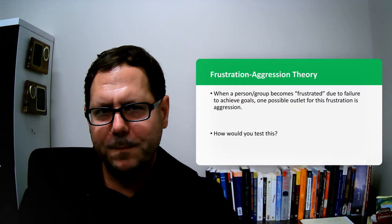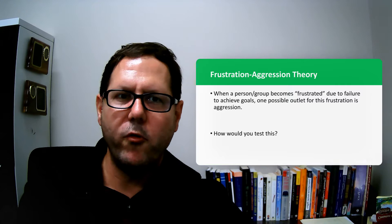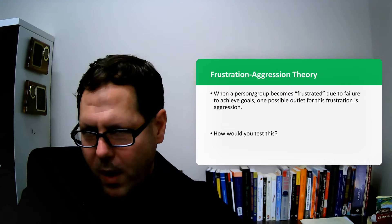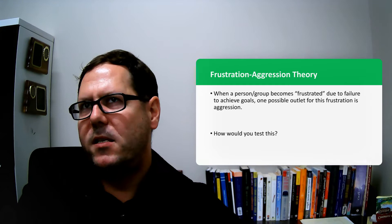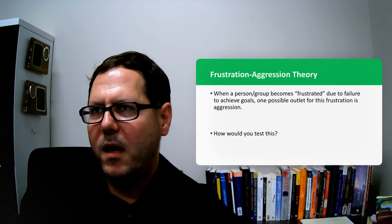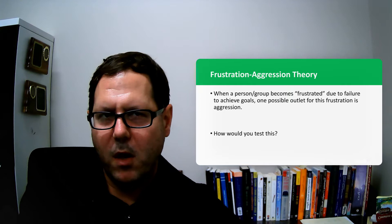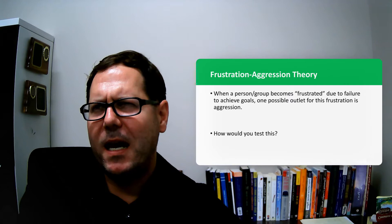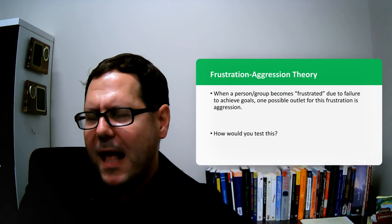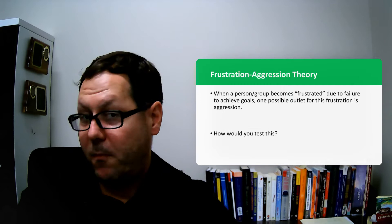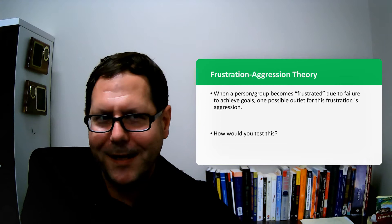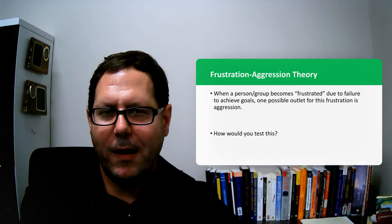This is where frustration-aggression theory comes from. When a group or person becomes frustrated due to failure to achieve goals, one possible outlet for that frustration is violence or aggression. If I was trying to test this argument, I would assume that where we see the most grievances, the most oppression, the most dissatisfaction or anger—however I choose to measure that—that's where I would be seeing the most violence. There should be a pretty strong correlation, maybe not perfect because we have wiggle words that one possible outlet is frustration, but correlation is something we should expect to see.